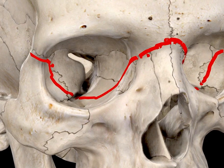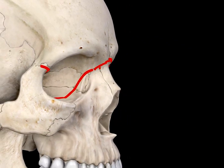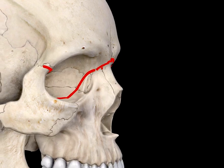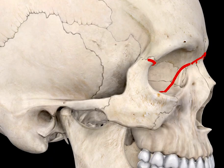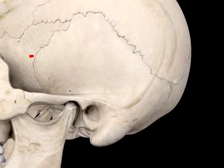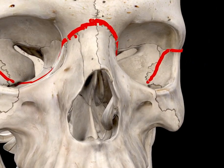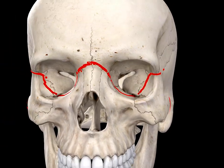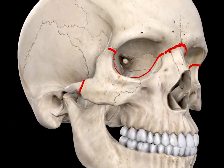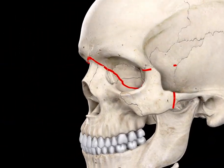The line also fractures the pterygoid plates here and also here. So this is the Le Fort 3 fracture line — it is also called craniofacial disjunction.